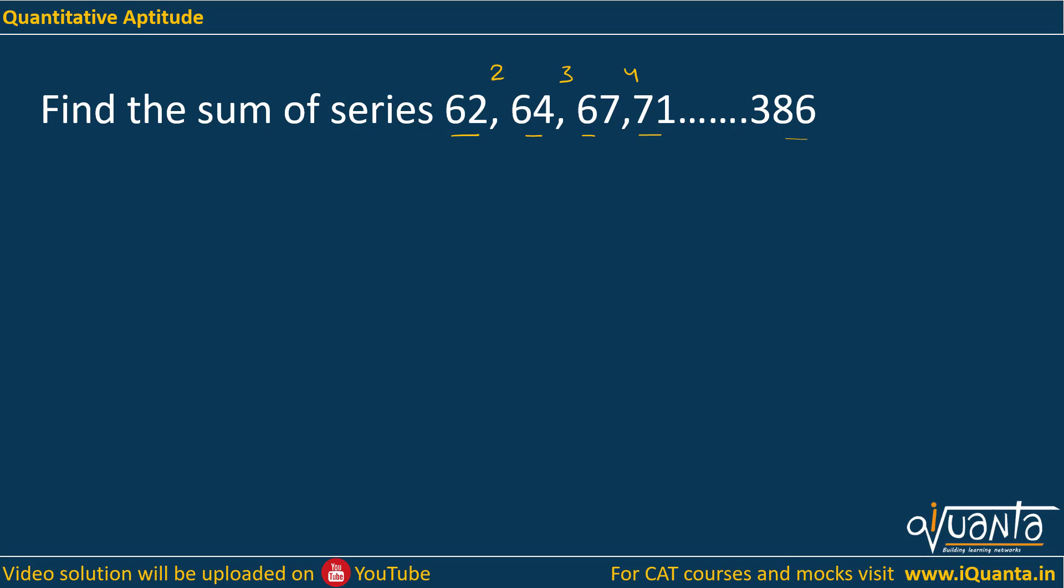Whenever such a question comes, you have to assume its general term which is TN equal to AN square plus BN plus C, where ABC are some real numbers and this N represents the number of term. So if I take T1, that means I have to consider term 1 of this series which is 62.